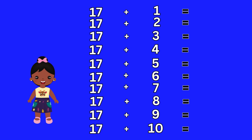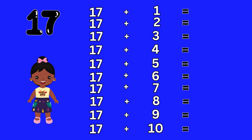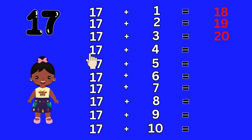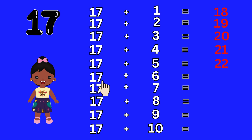Addition table 17. 17 plus 1 equal to 18. 17 plus 2 equal to 19. 17 plus 3 equal to 20. 17 plus 4 equal to 21. 17 plus 5 equal to 22. 17 plus 6 equal to 23.